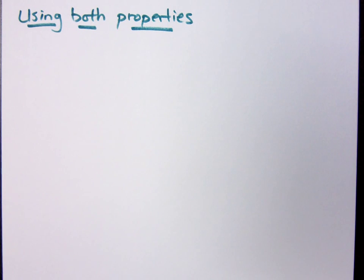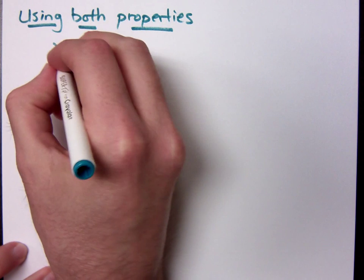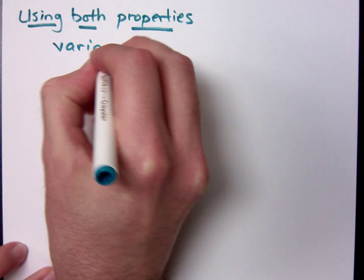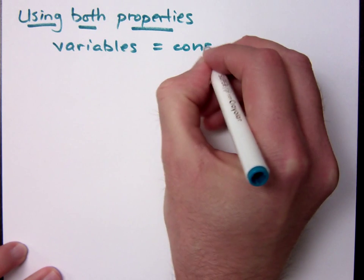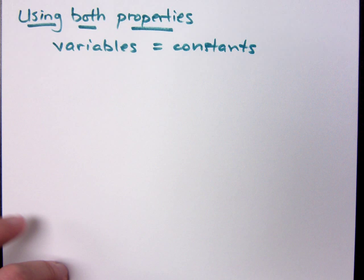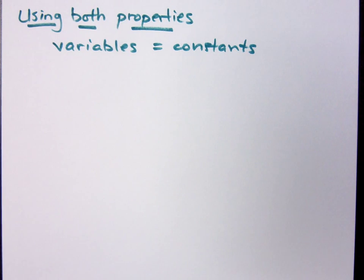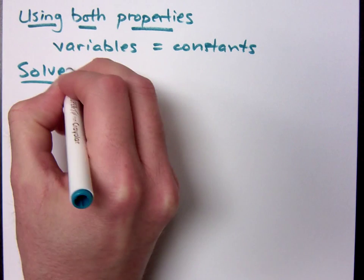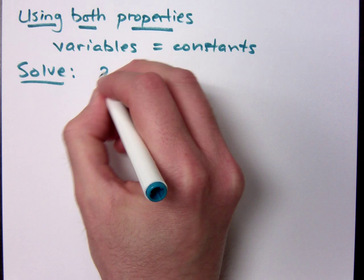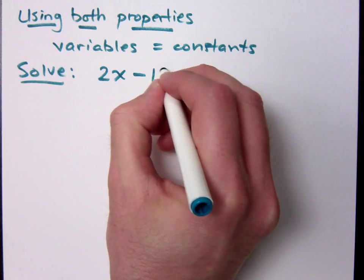Let's look at solving equations using both properties. The key thing here is the first step is to make sure that you have your variable terms on one side and your constant terms on the other side. That is the important step. You can do this because you can move terms from one side to the other by using the addition property. We're going to start off with a few small examples and work our way up to more difficult and complicated problems.